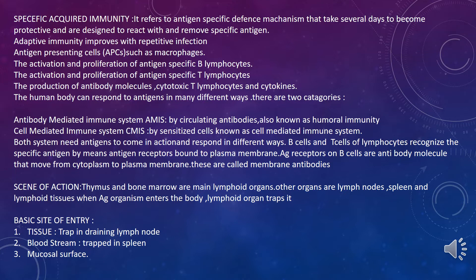Antigen presenting cells such as macrophages cause activation and proliferation of antigen-specific B lymphocytes and T lymphocytes, then production of antibody molecules, cytotoxic T lymphocytes and cytokines. The human body can respond to antigens in many different ways. The first one is the antibody mediated immune system.